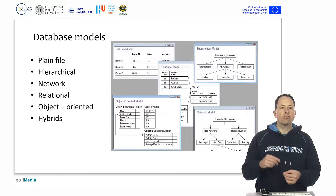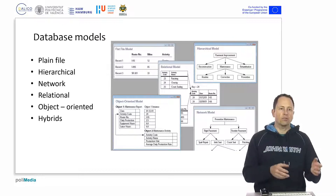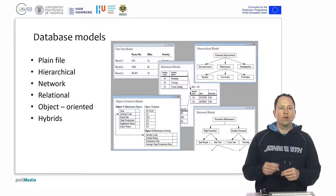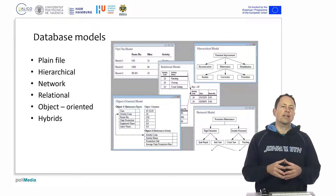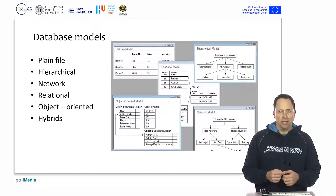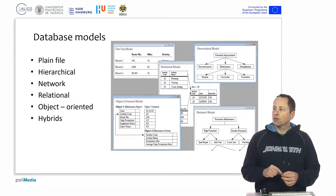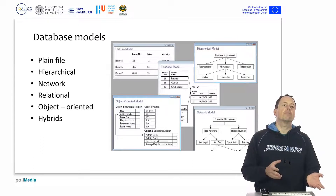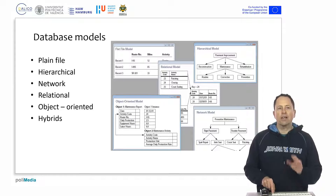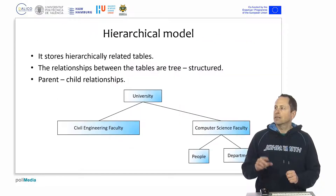There are other database models, like the hierarchical data model and the network data model, which we will now see. The relational data model is the one on which almost all databases used in business systems are based today. There is also the object-oriented data model and a hybrid model that combines the relational and the object-oriented database models.